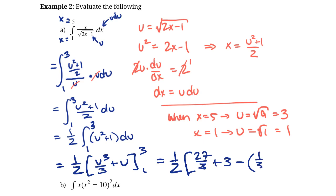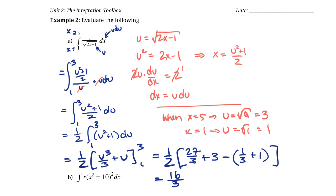When we simplify that whole thing, we end up getting 16/3, and that's our answer. That's the area of the original function between x = 1 and x = 5. We successfully used our substitution to solve this. Note that we didn't have to plug x back in for the u's, because we already changed the limits of integration. We're just looking for a numerical answer, which is 16/3.